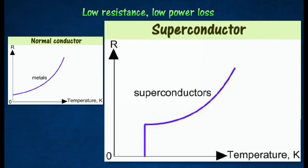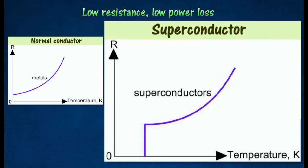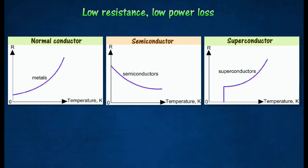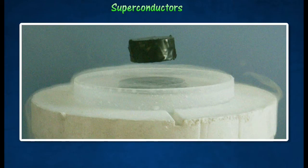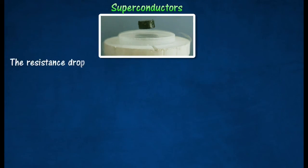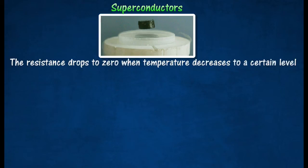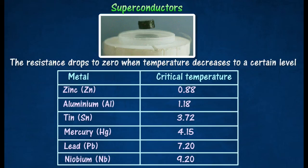For superconductors, the resistance drops to zero when temperature decreases to a certain level. Superconductors are materials whose resistance turns to zero when cooled below a certain temperature known as critical temperature. The table shows examples of critical temperatures of metals that act as superconductors.